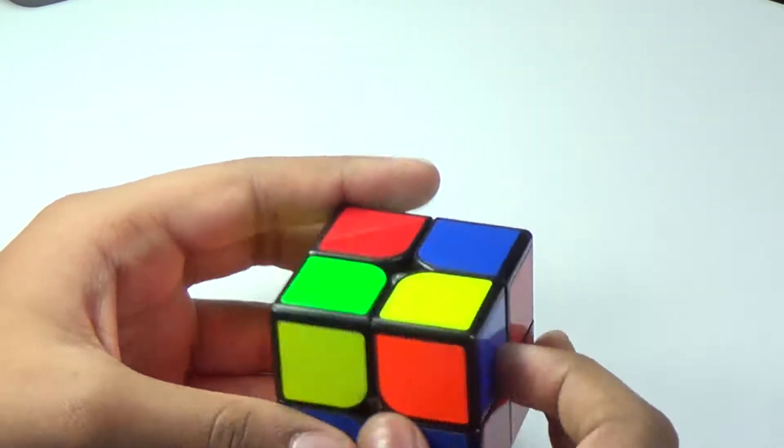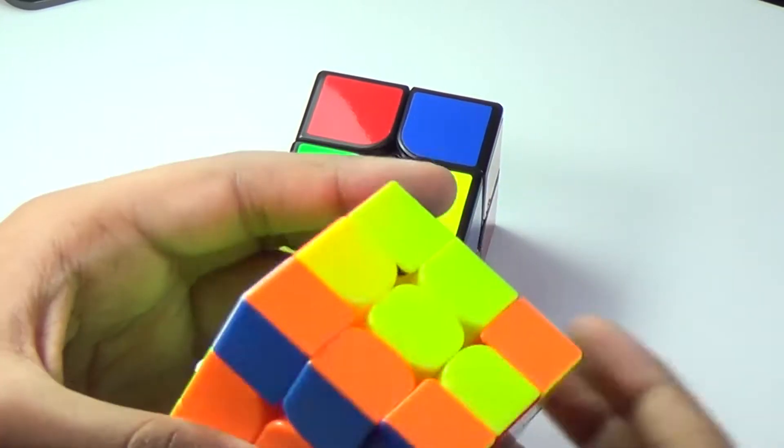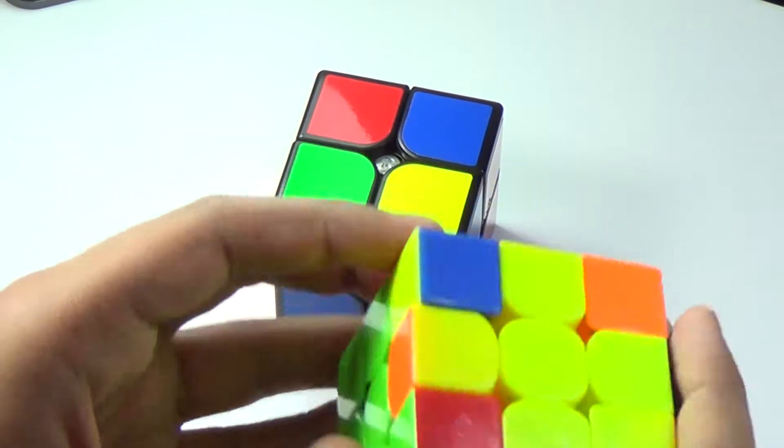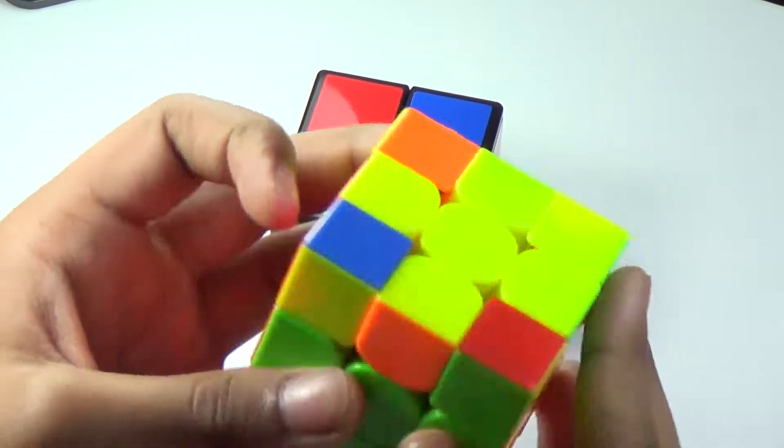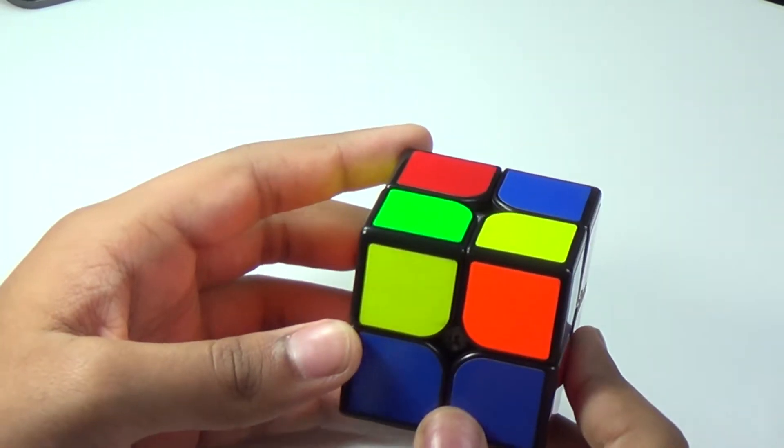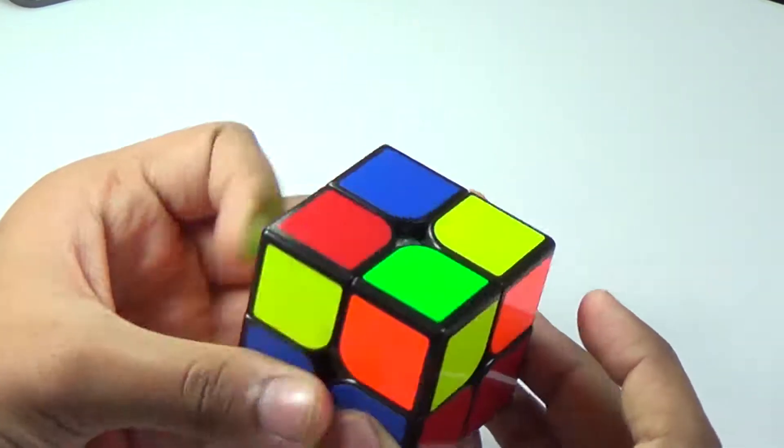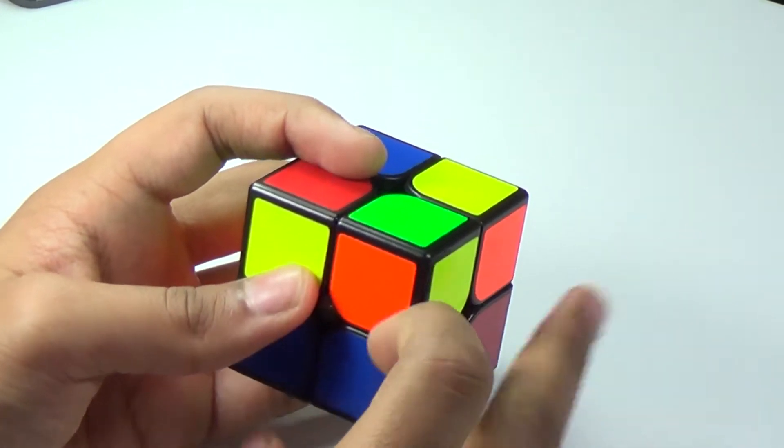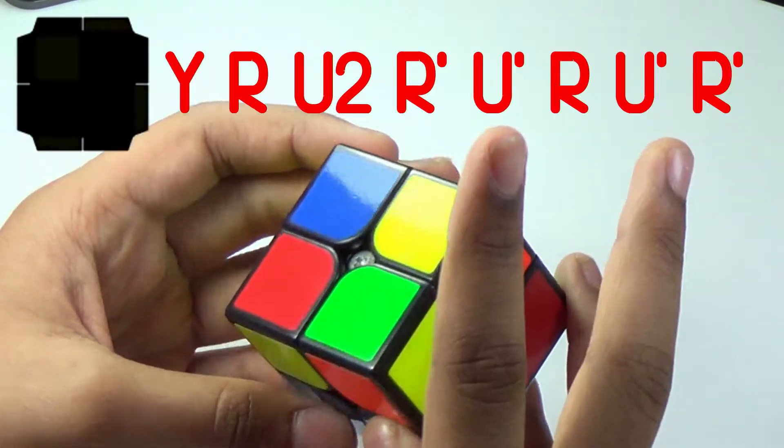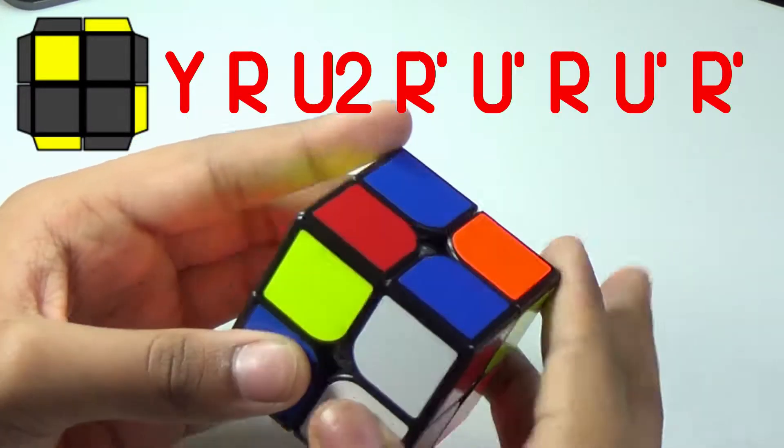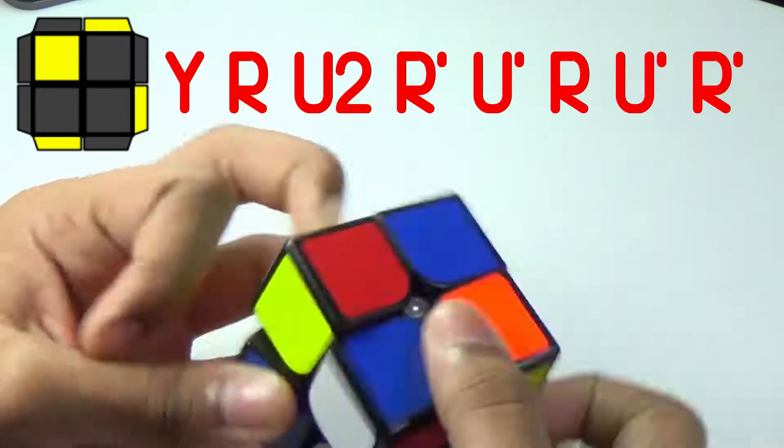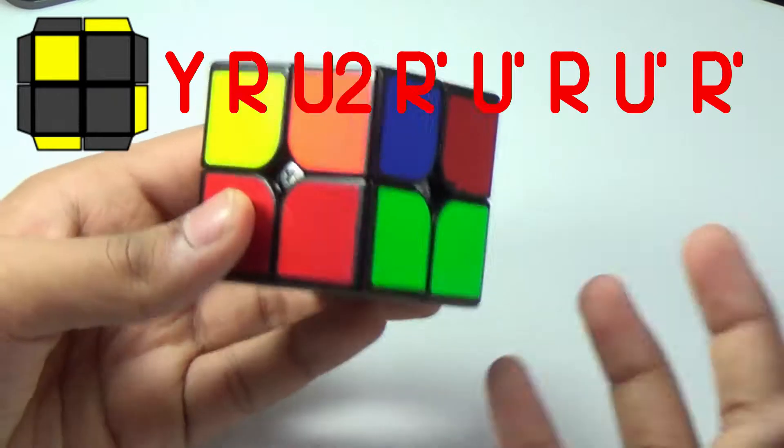Next up, we've got this one. This is just the opposite of this, the Sune, and basically, this is the anti-Sune. So how I orient it or recognize it's pretty easy on the 2x2, but how I orient it is I make sure this corner faces the right and the one faces me. And I use this algorithm. Like that. I mean, it's a pretty straightforward algorithm.